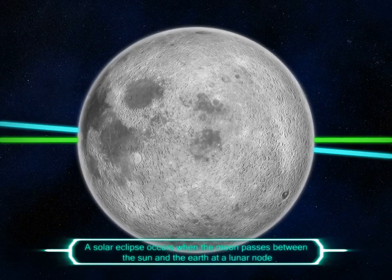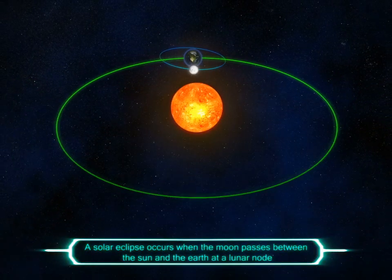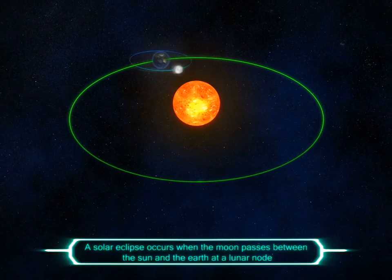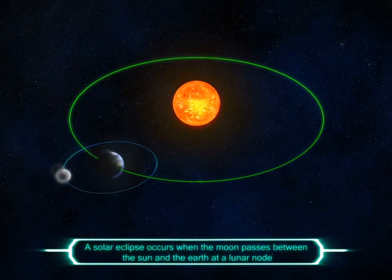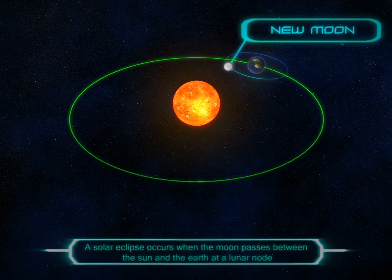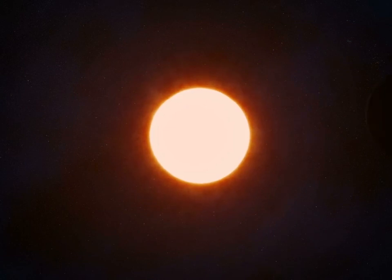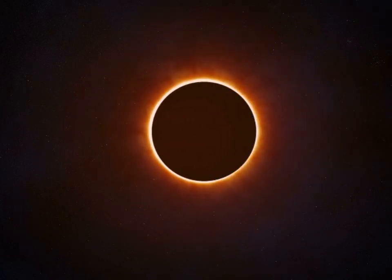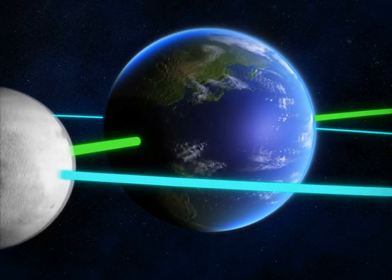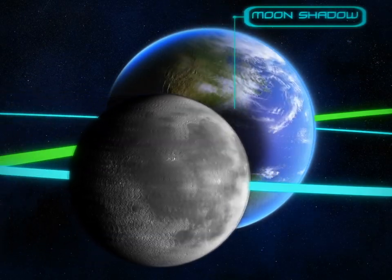A solar eclipse occurs when the moon passes between the sun and the earth at a lunar node. This can only happen when there is a new moon. The moon may partially or entirely block the sun during a solar eclipse, and at this time the shadow of the moon falls on the earth.